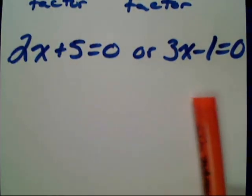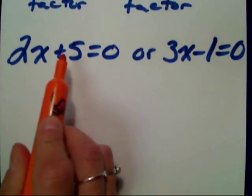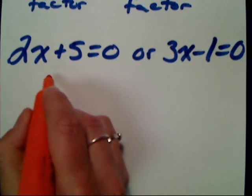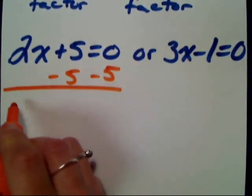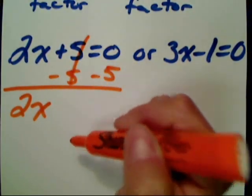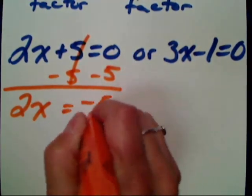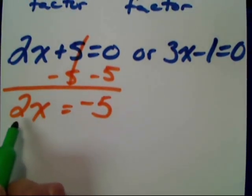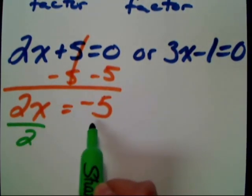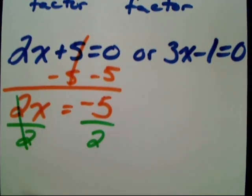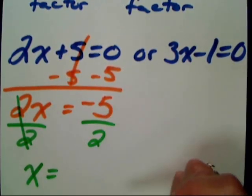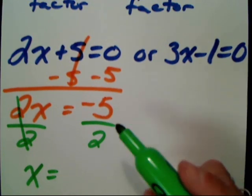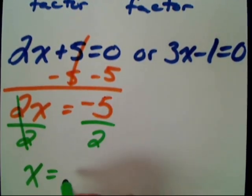So: 2x + 5 = 0, or 3x − 1 = 0. These are two-step linear equations I solve separately. To solve 2x + 5 = 0, get the term with the variable by itself — subtract five from both sides. Five minus five cancels; zero minus five is negative five. Then divide both sides by two to get X by itself. We leave it as a reduced improper fraction, never a decimal — so the answer is negative five-halves.